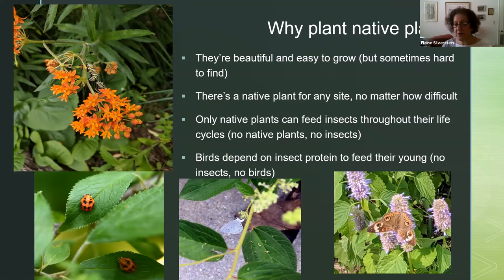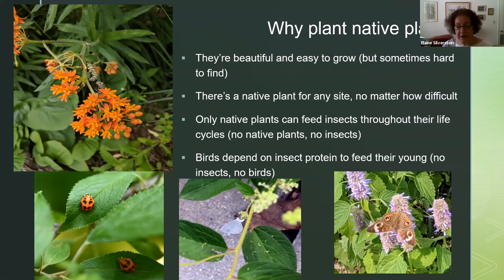If you don't have caterpillars in your garden, you will also not have birds in your garden. There have been many studies done recently about what birds need to reproduce successfully, and what they need are native plants that are not sprayed with pesticides so that they can find caterpillars — it's particularly caterpillars. Life basically depends on everybody eating everybody else. If you don't have native plants, you won't have caterpillars; if you don't have caterpillars, you won't have birds, period.